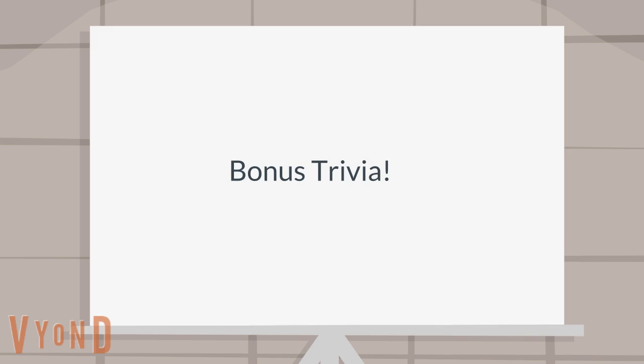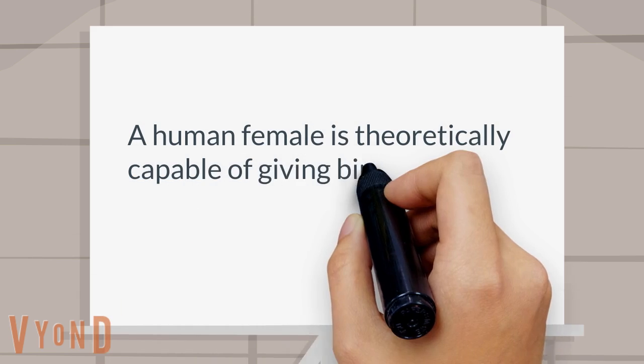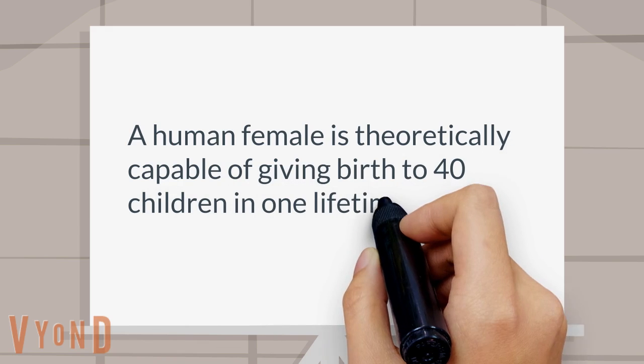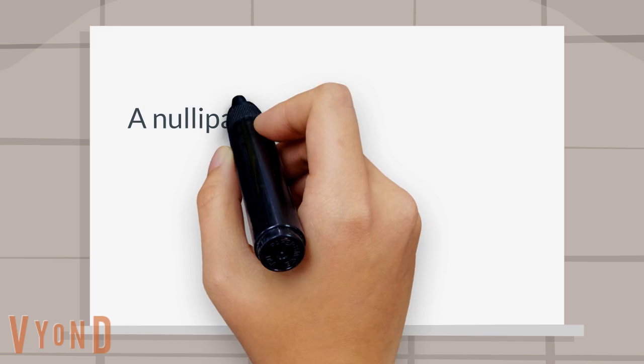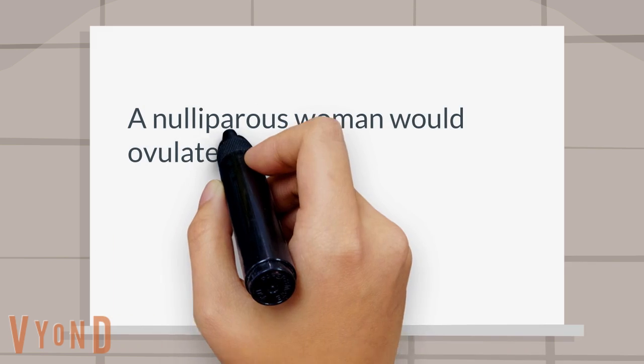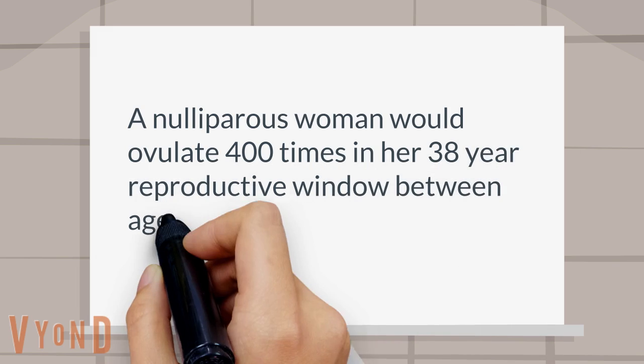Bonus trivia! A human female is theoretically capable of giving birth to 40 children in one lifetime. A nulliparous woman would ovulate 400 times in her 38-year reproductive window between ages 13 to 51.